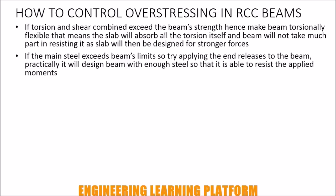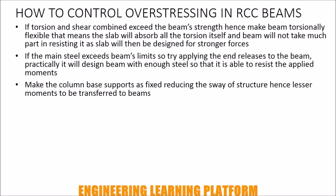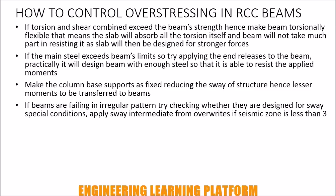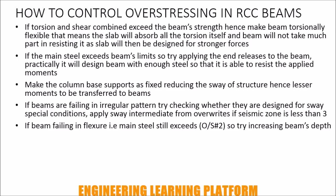If the main steel exceeds the beam's limits, try applying end releases to the beam — practically it will design beams with enough bottom steel to resist the applied moments, or make column base supports as fixed, reducing the sway of the structure and hence lessening the moments. If beams are failing in an irregular pattern, check whether they are designed for a special condition. Apply sway intermediate frame overrides if the seismic zone is less than 3.